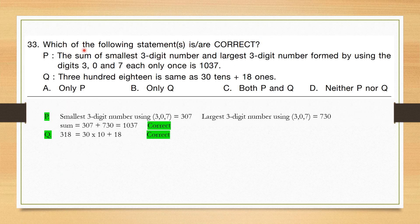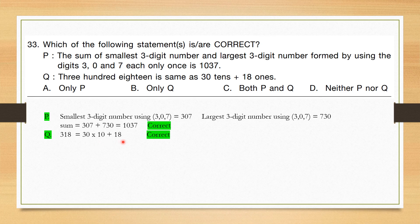Question number 33: Which of the following statements is correct? Statement P: The sum of the smallest and largest 3-digit numbers formed using digits 3, 0, 7 each only once is 1037. The smallest is 307 and largest is 730; 307 + 730 = 1037 — correct. Statement Q: 318 is the same as 30 tens plus 18 ones — 30 × 10 + 18 = 318 — also correct. So both statements P and Q are correct.